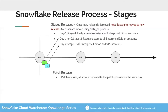In the second stage, which could be the same day or the next day, regular access is granted to all Enterprise Edition accounts. In stage three, all Enterprise Edition or Virtual Private Snowflake accounts receive the update. Importantly, patch releases do not go through the stage process — they simply move all accounts to the newer version at the same time.